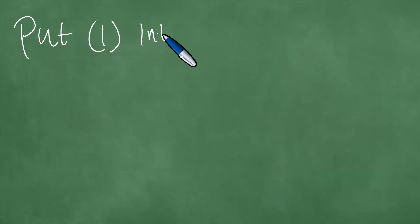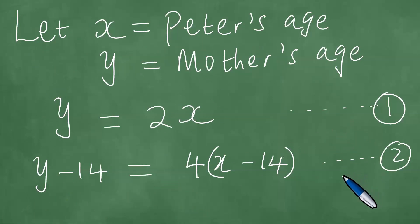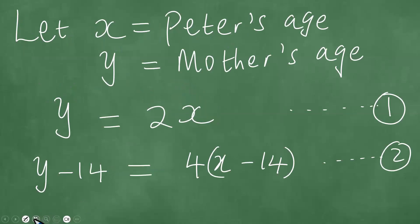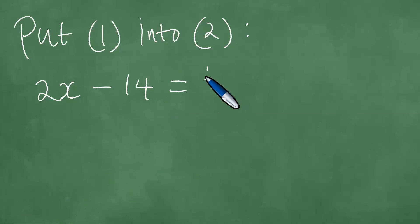So if you put equation one into equation two, meaning wherever there is y, you put 2x because y equals 2x. So we're going to have therefore 2x minus 14, which equals four into x minus 14.